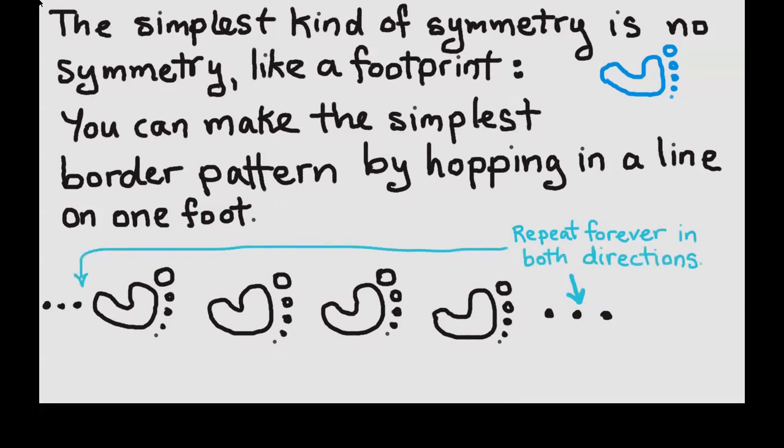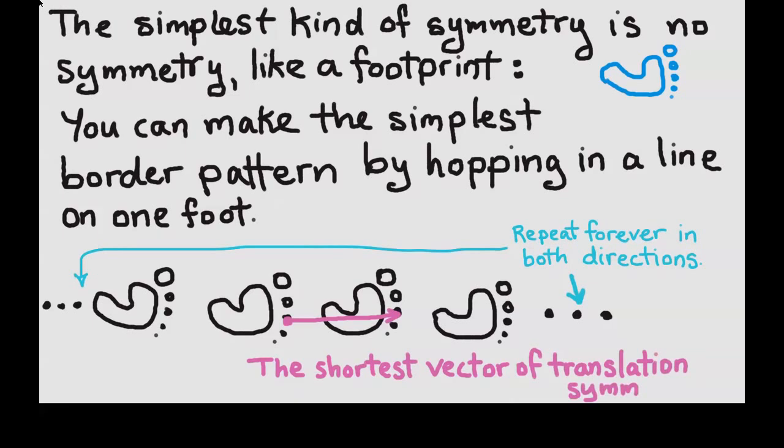I'm putting dots at both ends to show that it repeats forever in both directions. The shortest vector of translation symmetry is drawn in by finding corresponding points on two adjacent motifs.